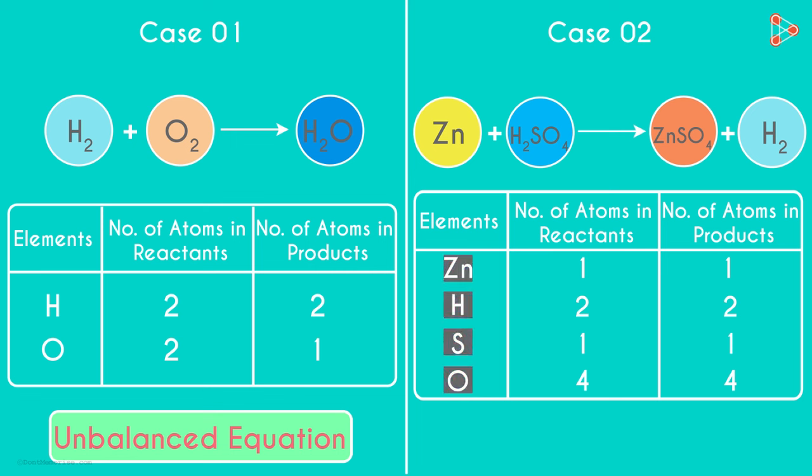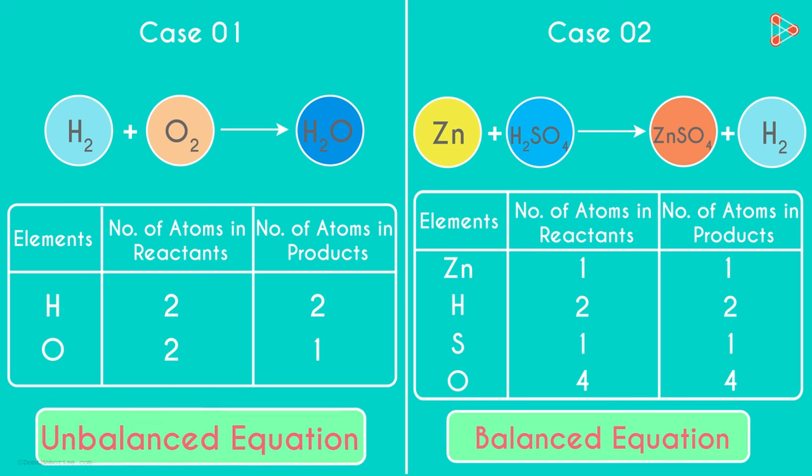You notice that for each element, the number of atoms on the reactant side is equal to the number of atoms on the product side. And note my words, it is true for each of the elements involved in the equation. We call such a chemical equation a balanced equation. Now you know the difference between balanced and unbalanced chemical equations.